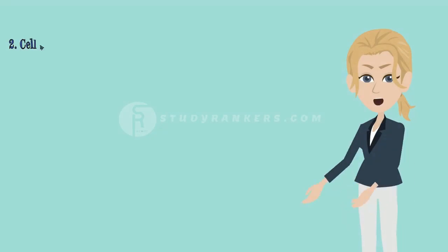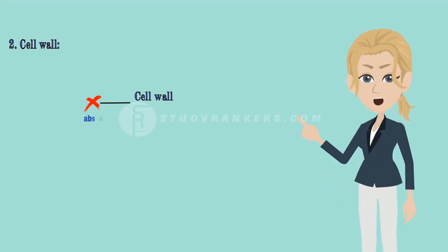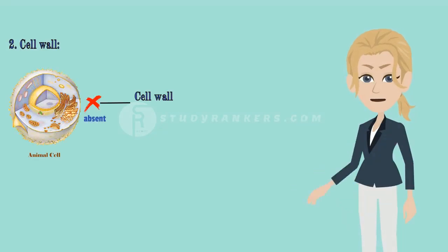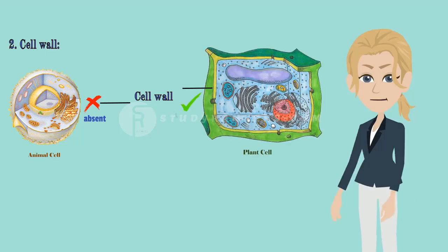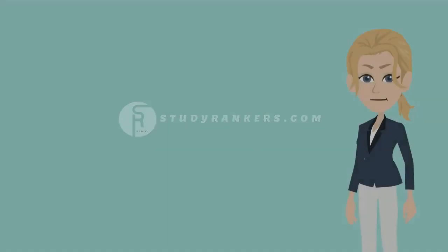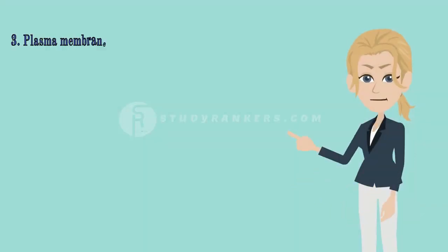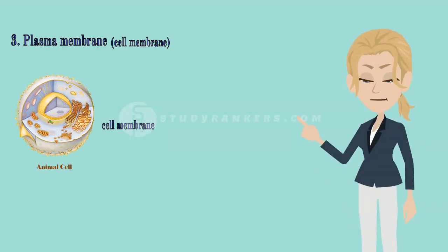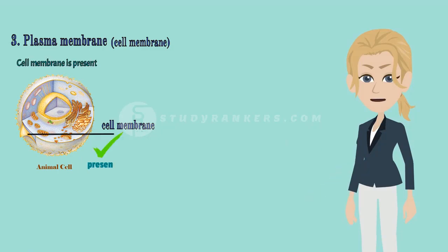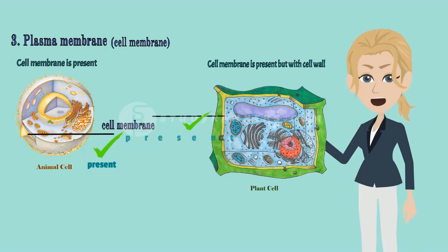Second one is cell wall. It is absent in animal cell. While, cell wall is present in the plant cell in the form of cellulose. Third is plasma membrane. In animal cell, only cell membrane is present. Whereas, in plant cell, cell membrane is present but with cell wall.